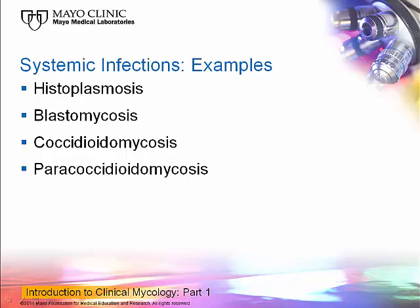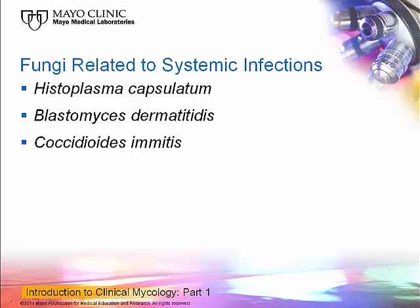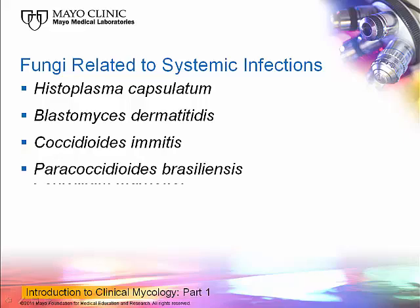In terms of systemic infections, histoplasmosis, blastomycosis, coccidioidomycosis, and paracoccidioidomycosis are grouped under this heading, along with another organism I'll mention shortly. The fungi involved include Histoplasma capsulatum, Blastomyces dermatitidis, Coccidioides immitis, Paracoccidioides brasiliensis, and Penicillium marneffei, which causes penicilliosis in places like Cambodia, Vietnam, and Thailand. We don't see it in this country very often, but we do see it.